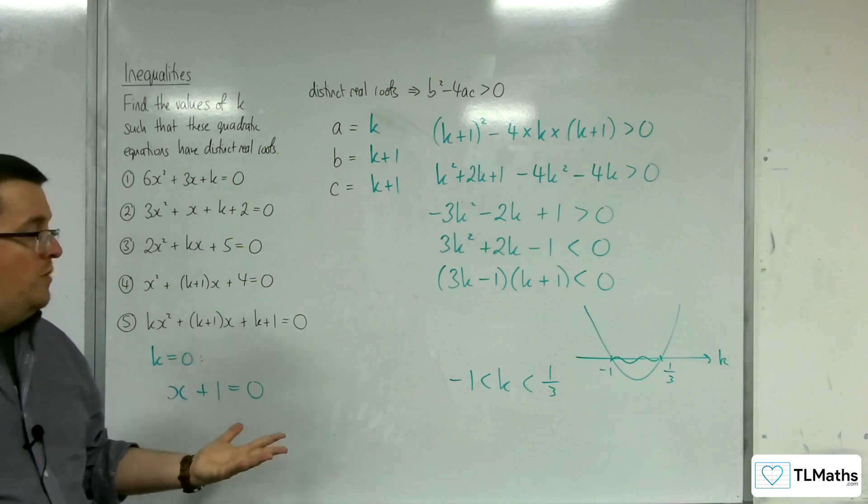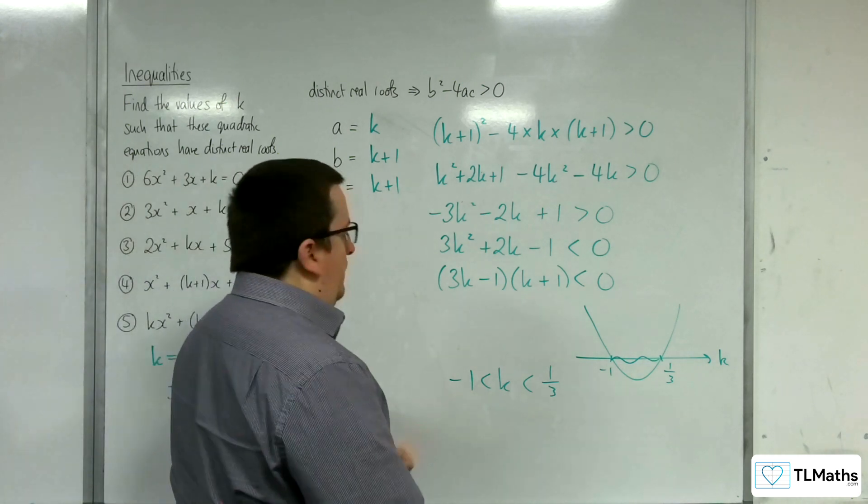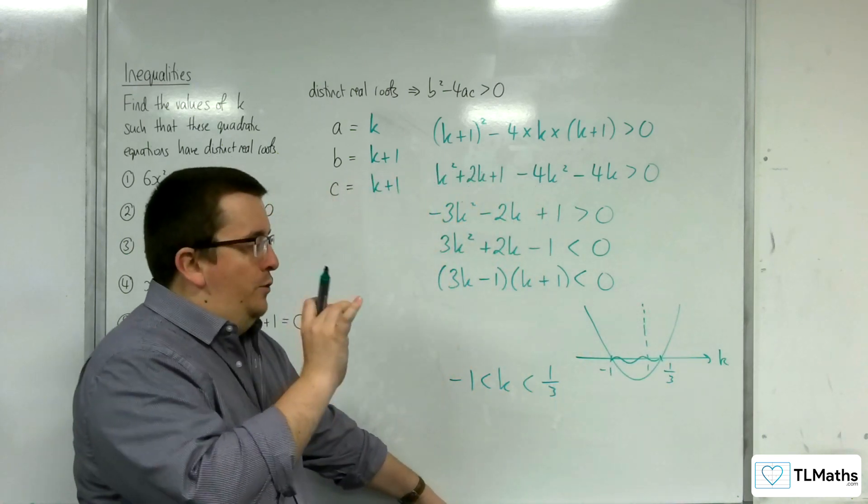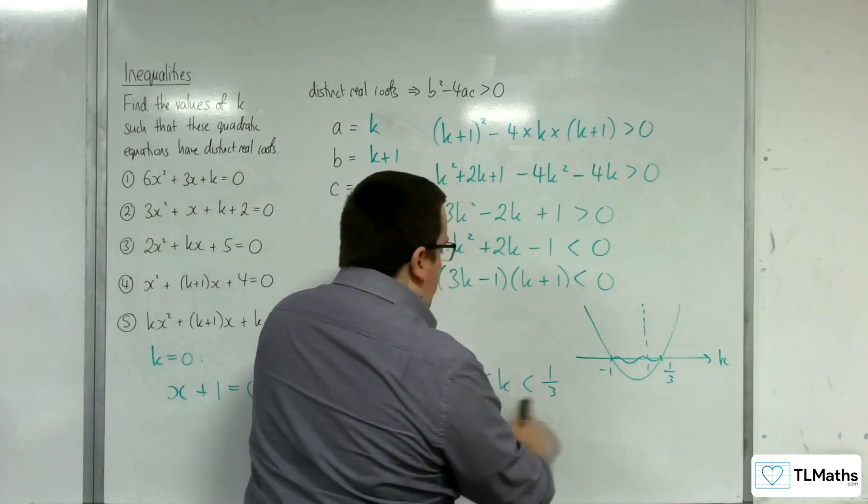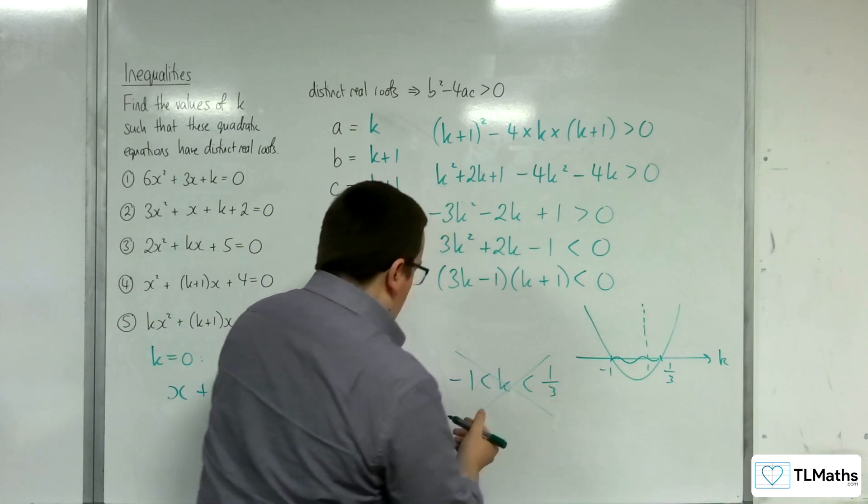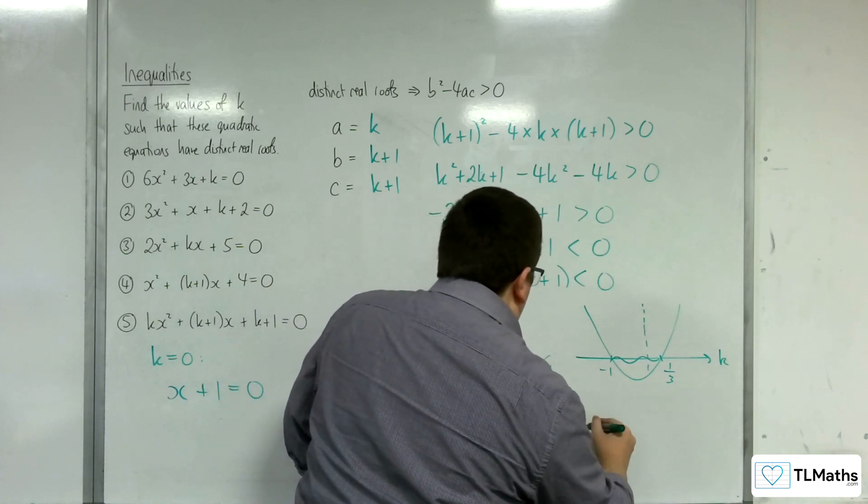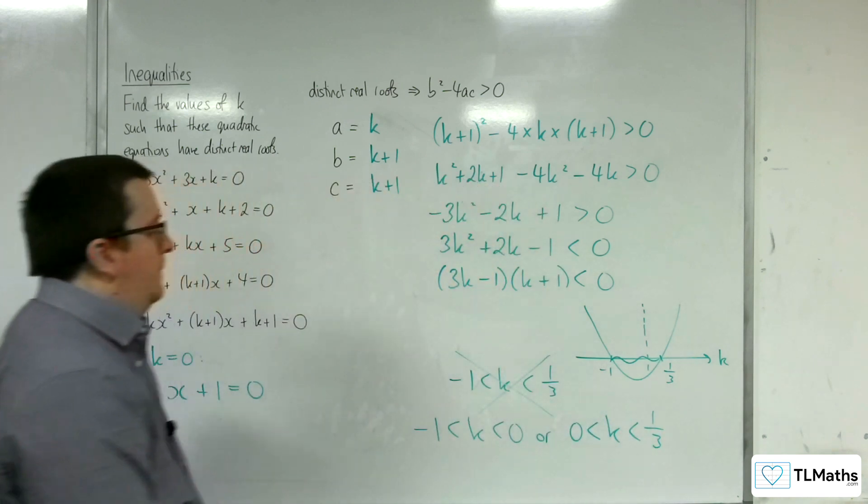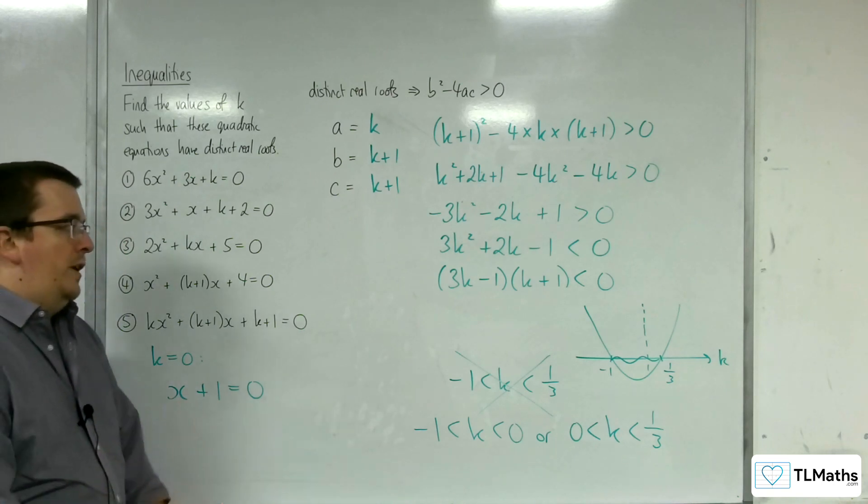There is a problem with k equals 0 because you're not getting a quadratic anymore. How can we identify that? Well, because we're not including 0, that means, effectively, we have this break. And we can't include it. You've got to work up to it from both directions. Rather than writing that, we can't write that. We've got to say that k is greater than minus 1 but less than 0. Or, k is greater than 0 but less than a third. It's actually these two regions that we need to consider, rather than including k is 0, because then we don't actually have a quadratic equation.